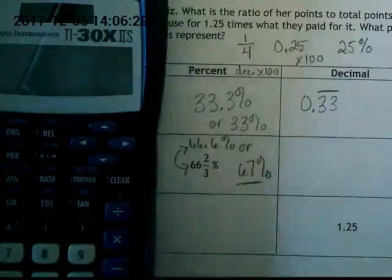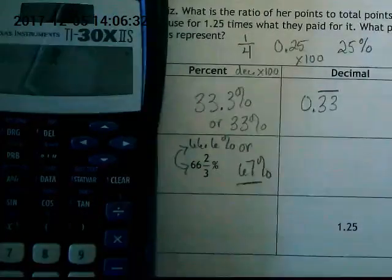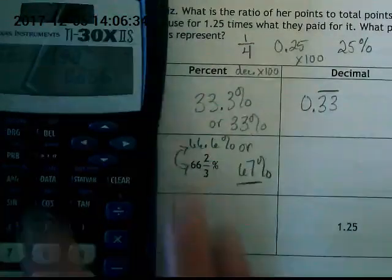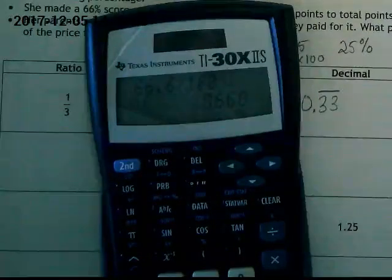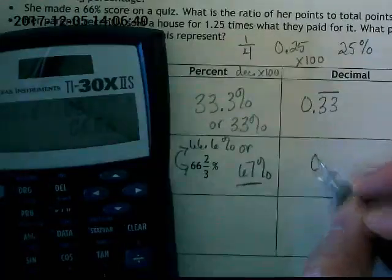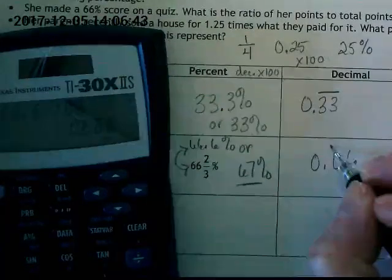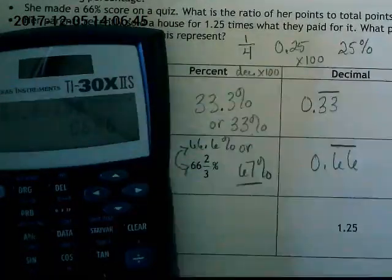66.6% divided by 100 is going to give us .66 going on and on and on. And put a line over it because again, it goes on forever.